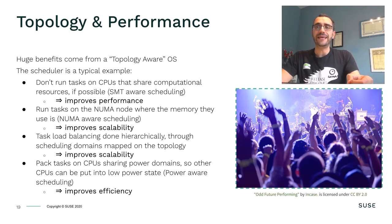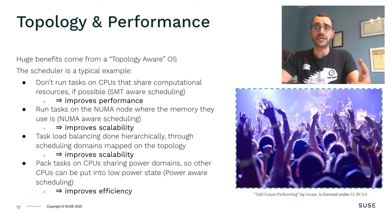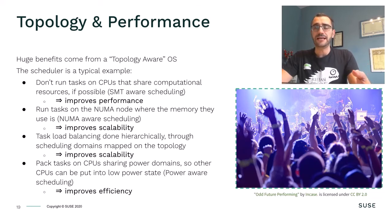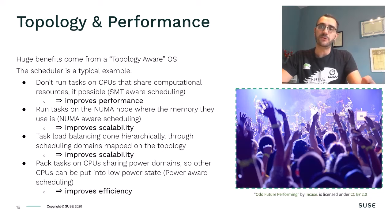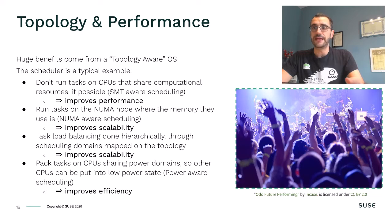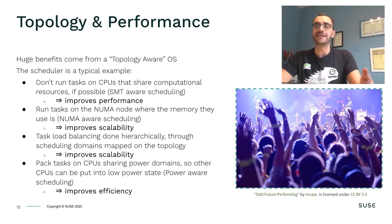In general, querying the details about the physical system topology and taking them into account when making decisions, mainly at the OS kernel level, is a good thing. The scheduler in the kernel is probably the most obvious example. If the scheduler knows about symmetric multithreading, it can avoid scheduling tasks on two threads if a full core is available, which improves performance. Or it can try to run a task on the NUMA node where the memory it uses the most resides, which improves scalability. These features and others are all present inside the Linux kernel scheduler.